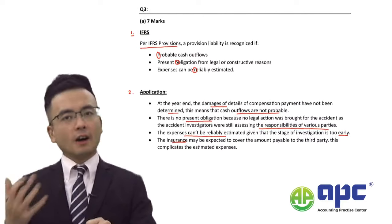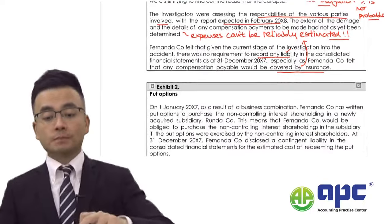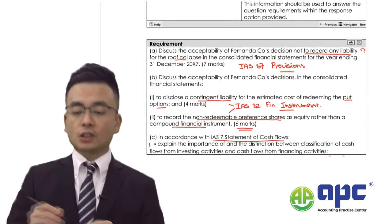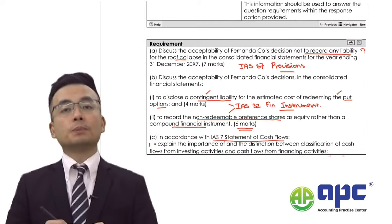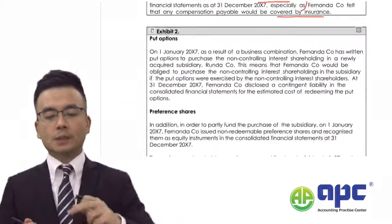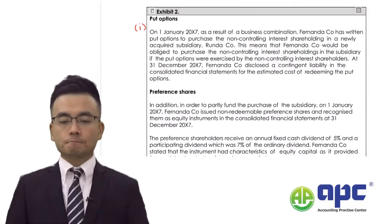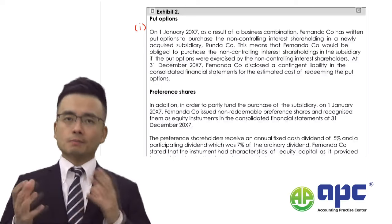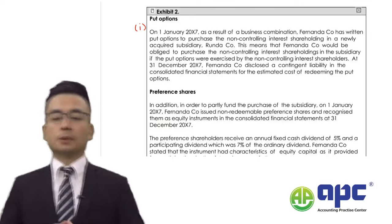Now let's move on to number two. Part B number one: the company has already disclosed a contingent liability to redeem the put options. Exhibit two — put options — relates to part B number one. It says that this year, as a result of a business combination — combining with, or buying, another company — our company has written, meaning sold, a put option.